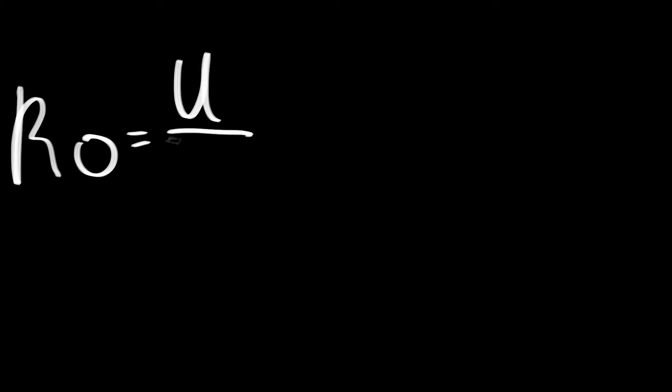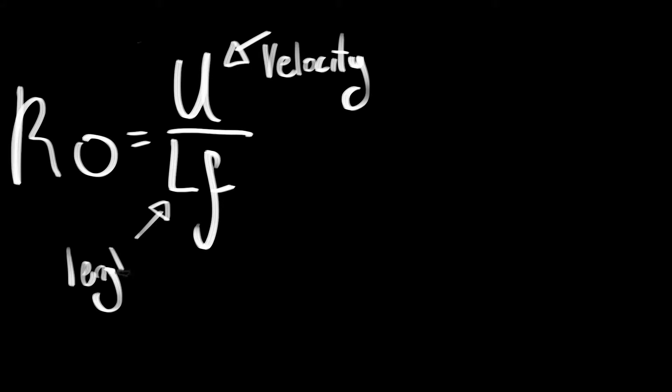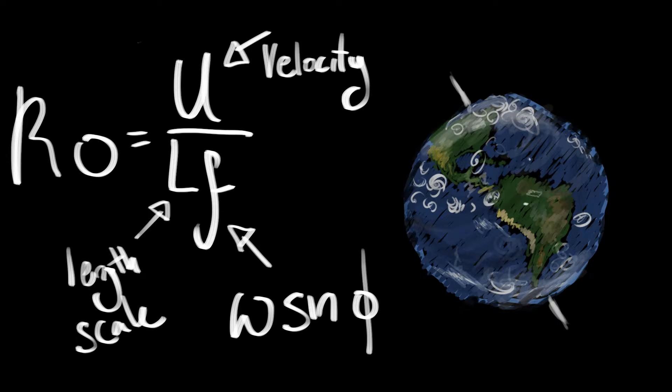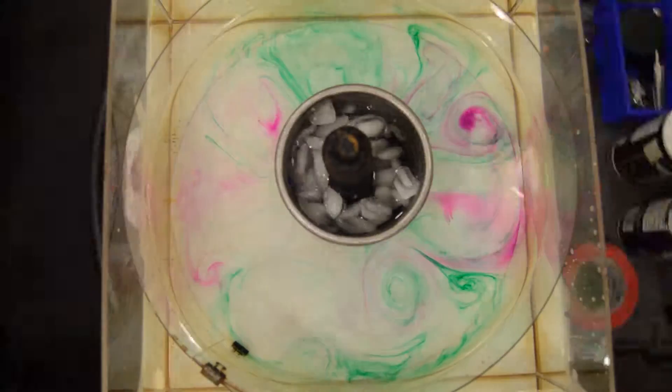This is the ratio of inertial forces to the Coriolis force, and it's defined as U over LF. For a system like the Earth, the U is the characteristic velocity, L is the length scale, and F is the Coriolis frequency, which is the angular frequency and the sine of the latitude. So if this is a dimensionless number, what's the physical meaning behind it?